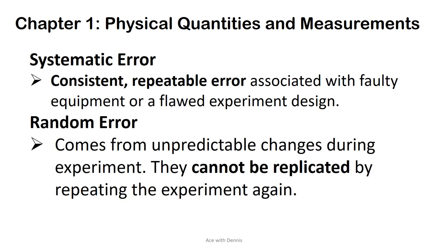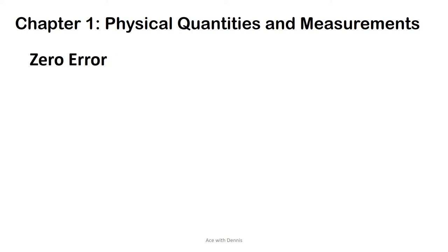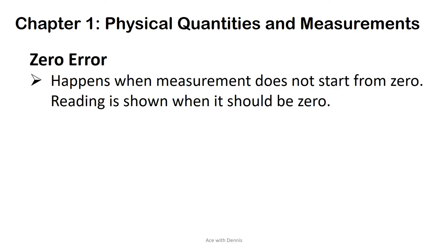Random error: Random error comes from unpredictable changes during experiment. They cannot be replicated by repeating the experiment again. Zero error: Zero error happens when measurement does not start from zero. Reading is shown when it should be zero.